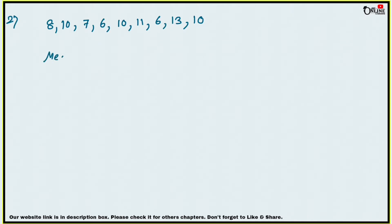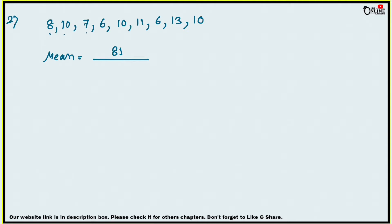Add 8 + 10 + 7 + 6 + 10 + 11 + 6 + 13 + 10, which gives 81. There are 9 numbers total, so divide by 9. Mean = 81 ÷ 9 = 9.